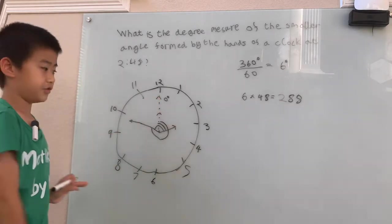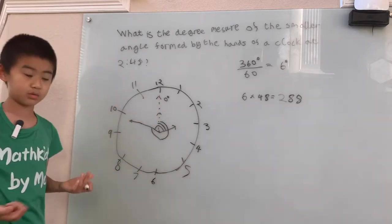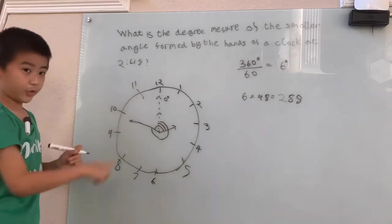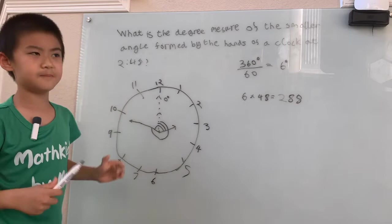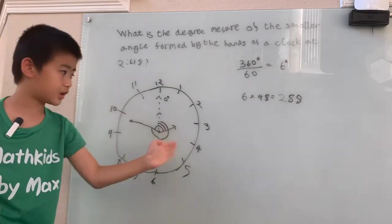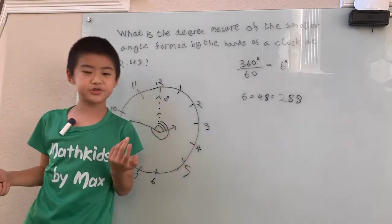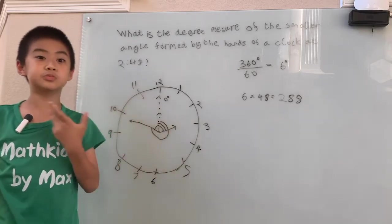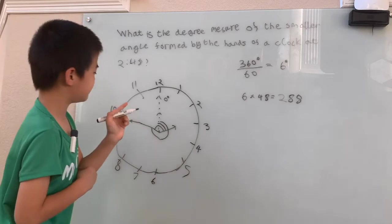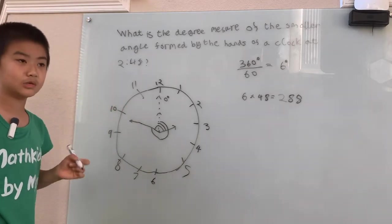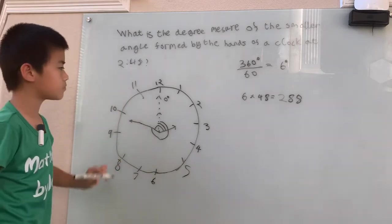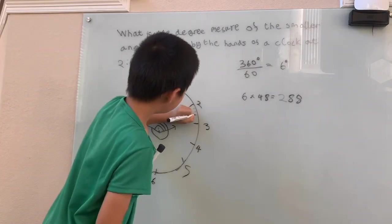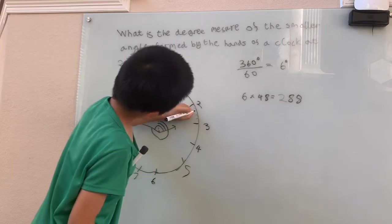We can take the whole circle, 360 degrees, subtract off the degree measure of the bigger angle, and then we get the degree measure of the smaller angle. Let's do that. First, we've got to find the degree measure of this smaller angle right there. Now, there's two ways we can do this. I'm going to first show you the counting way, and then the more algebraic way. First, counting way, that's the more low level.